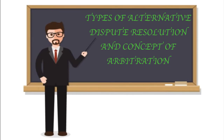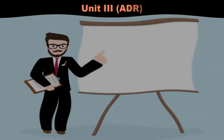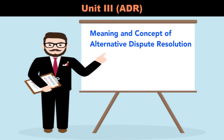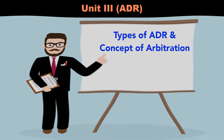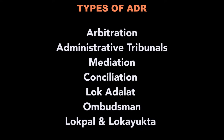Hello everyone. In this video I will discuss the types of alternative dispute resolution. In my previous video I discussed the meaning and concept of ADR. The types are based on the nature and modus operandi. Alternative dispute resolution can be categorized as arbitration, administrative tribunals, mediation, conciliation, Lok Adalat, Ombudsman, Lokpal and Lokayukta — seven major types of ADR in India.